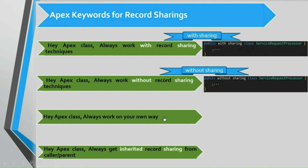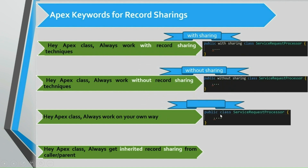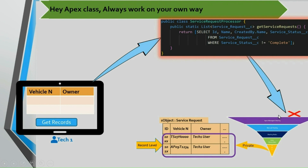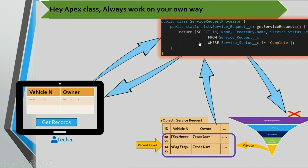The next one is omitted sharing, which we have already seen — we simply don't mention any keyword. As discussed, using omitted sharing is not recommended as there is a possibility of security issues when users directly access the methods via Visualforce page or REST APIs. In the omitted sharing scenario, when tech1 user uses a Visualforce page, the page invokes the method and it doesn't respect the sharing settings configured for the user, so it returns two records.